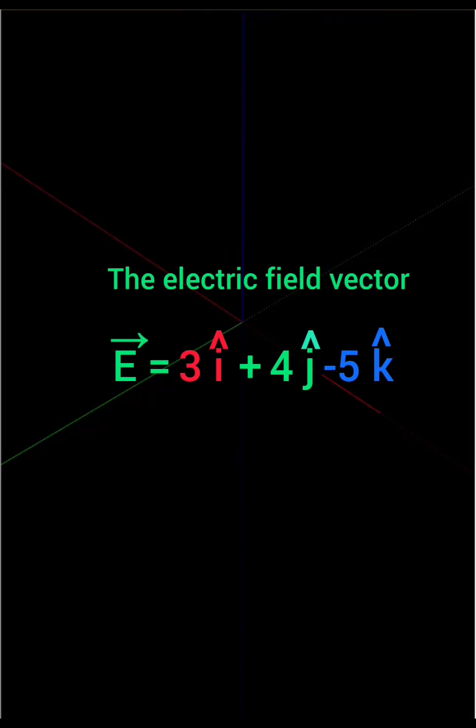To find the electric field vector, E is equal to 3i cap plus 4j cap minus 5k cap.